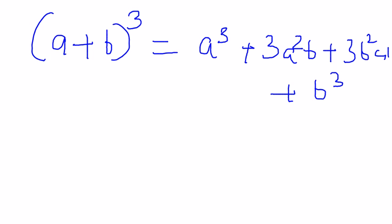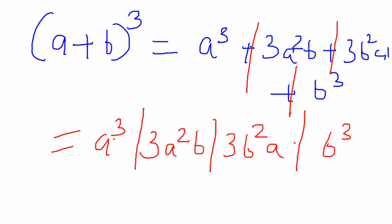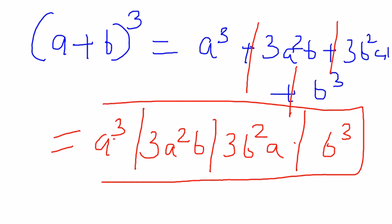Now what you have to do is just remove the plus sign. Write down this way: a cube slash 3a square b slash 3ab square slash b cube. So this is it and now finding the cube of a number is easy. Now let's try with examples.